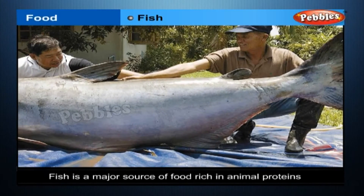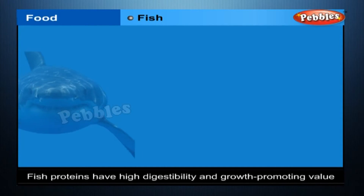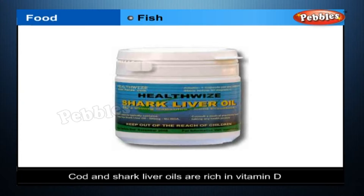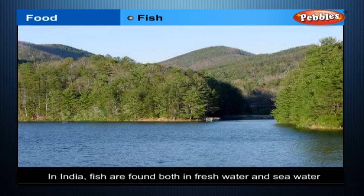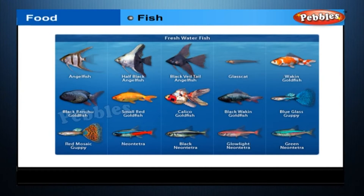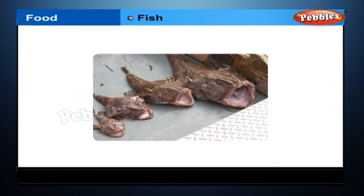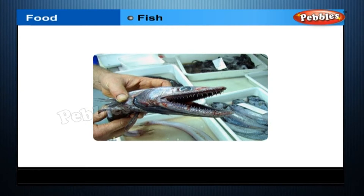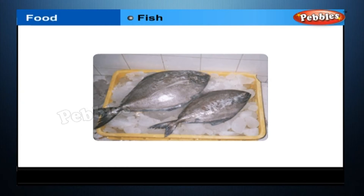Fish. Fish is a major source of food rich in animal proteins. Fish proteins have high digestibility and growth-promoting value. Also, cod and shark liver oils are rich in vitamin D. In India, fish are found both in fresh water — ponds, lakes, and rivers — and sea water. Fresh water fishes include catla and catfish. Sea water fishes include sardines, ribbonfish, red mulet, pomfret, and Bombay duck. Rearing and management of fish on a large scale is known as pisciculture. Fish are eaten either cooked, or in dried form, pickled form, and canned form.